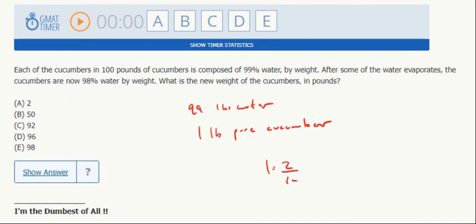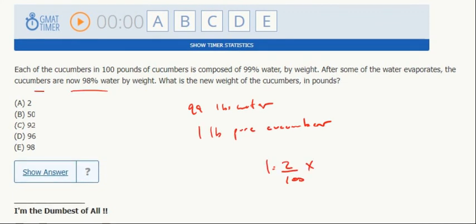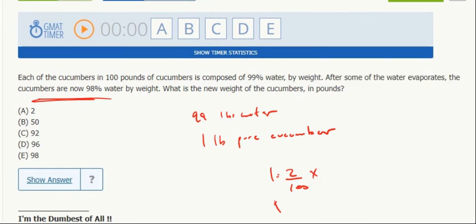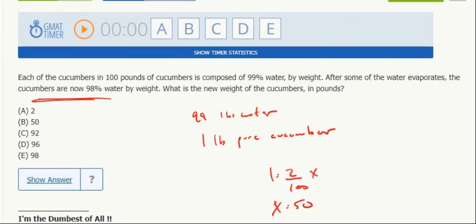going to be two percent of the total weight, because after the water evaporates the cucumbers are 98% water. So they're two percent pure cucumber. That amount that didn't evaporate, that didn't change—that one pound is two percent of the total. So the total is 50.